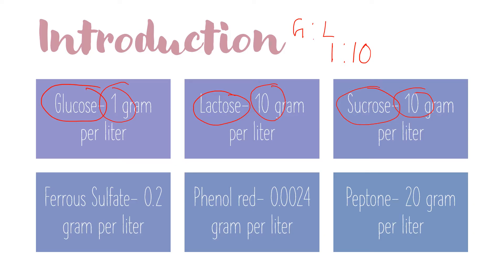Glucose can be utilized by almost every microorganism. So whenever bacteria are inoculated into the agar, they first utilize the glucose, then may utilize sucrose or lactose based upon the presence of their operon. If they have the lactose or sucrose operon, they can utilize those sugars; if not, they will utilize the protein.